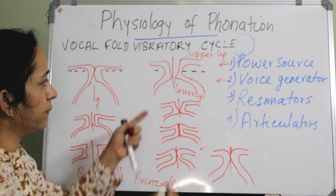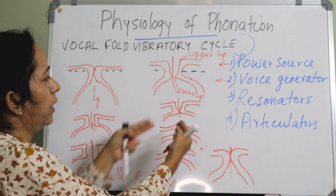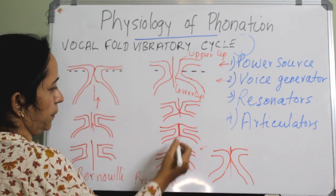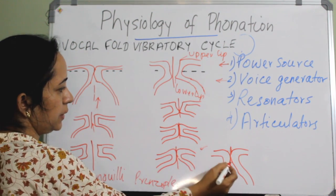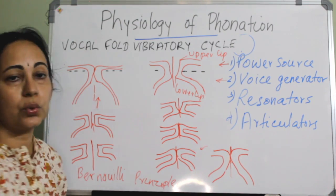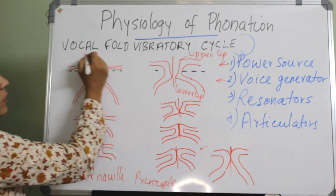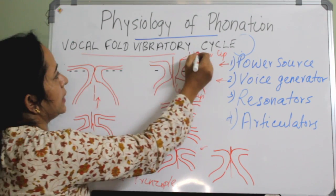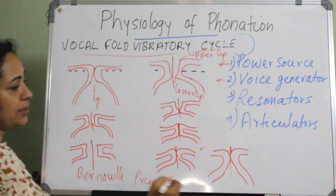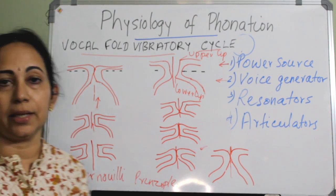The sucked-in mucosa causes the vocal folds to start closing again — from the lower lip to the upper lip. Then they are closed again. This is the vocal fold vibratory cycle — one cycle — and it repeats again and again.